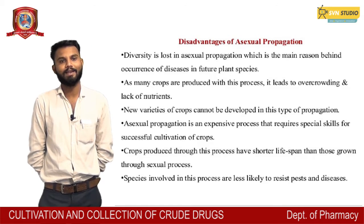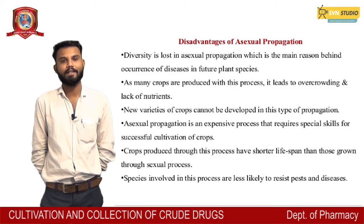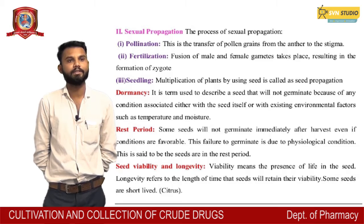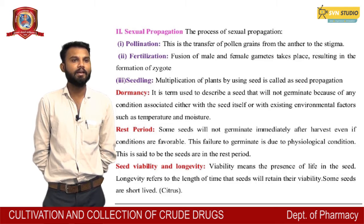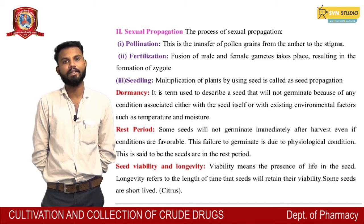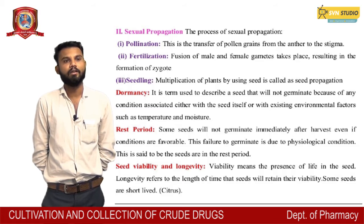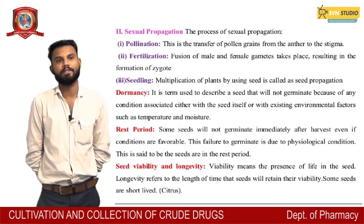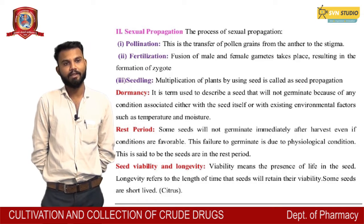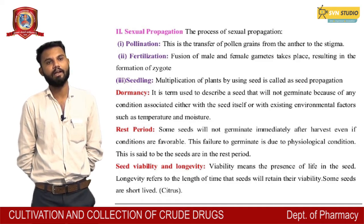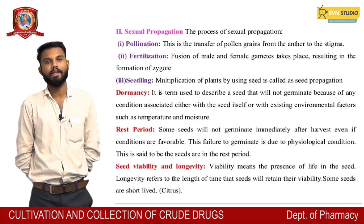Species involved in asexual propagation are less likely to resist pest and disease. Sexual propagation: The first process is pollination — the transfer of pollen grains from the anther to the stigma. Second is fertilization — fusion of male and female gametes takes place, resulting in the formation of a zygote. Third is seedling multiplication of plants by using seed, called seed propagation.